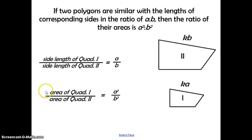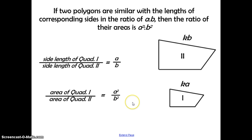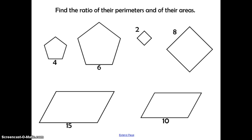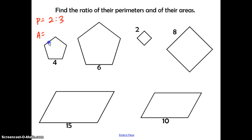Then the ratio of their areas — if we calculate the area of quadrilateral 1 and the area of quadrilateral 2, simplify and compare those — they end up in a ratio of A squared to B squared. Here, we want to find the ratio of the perimeters and areas of these two pentagons. They have a side length of 4 compared to 6, so their perimeters simplify to 2 to 3, and the ratio of their areas will be A squared to B squared, so 4 to 9.